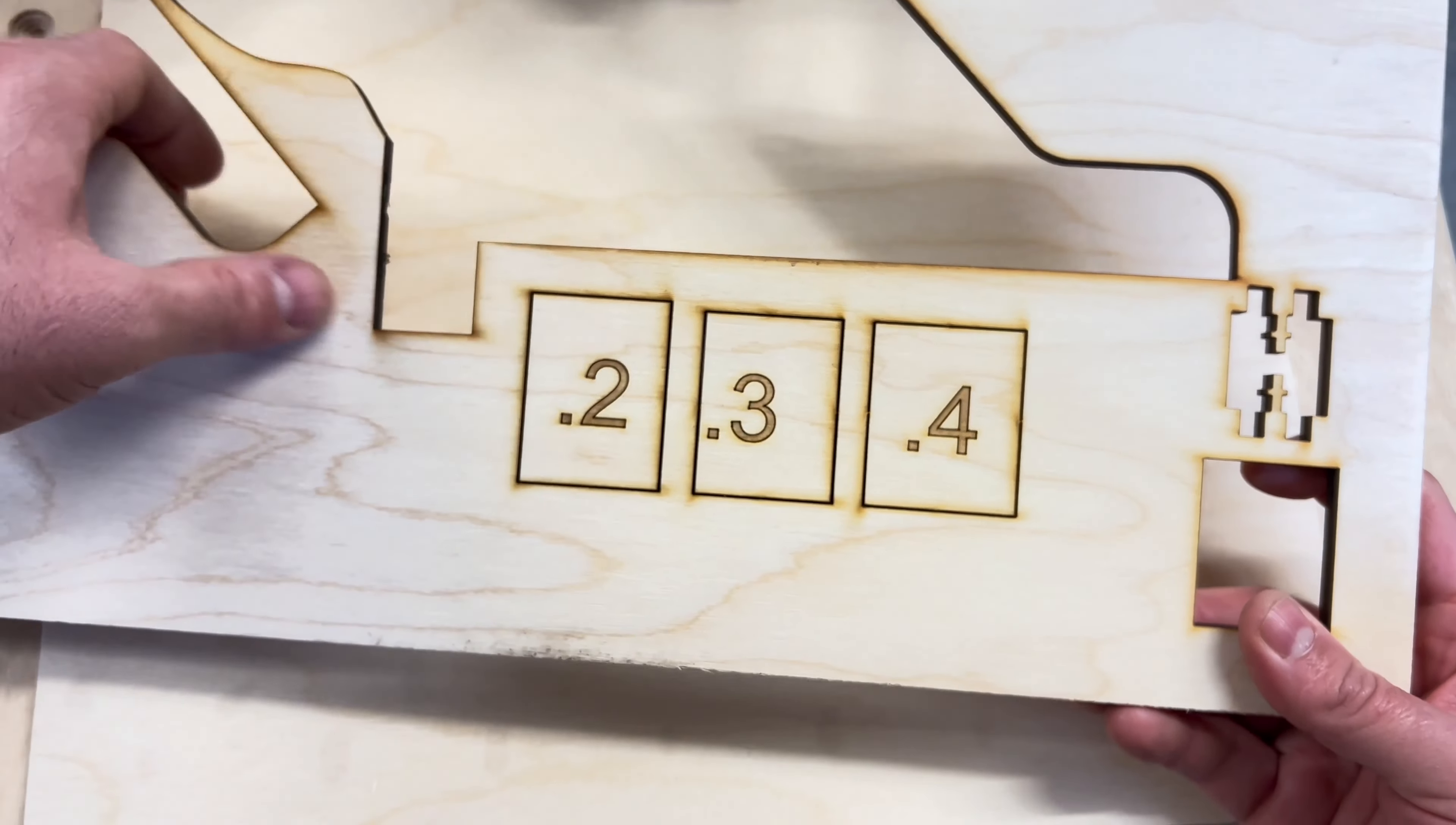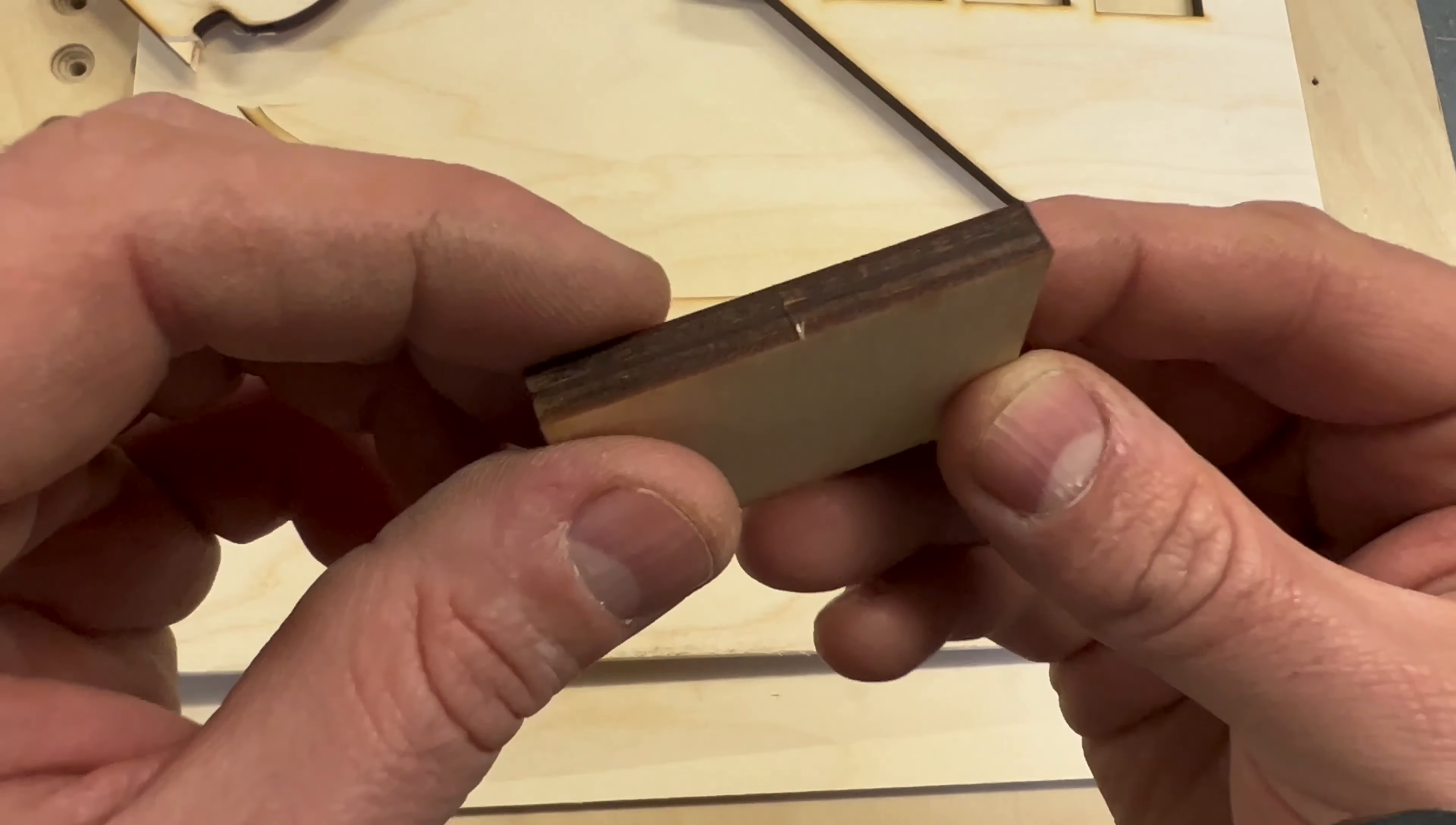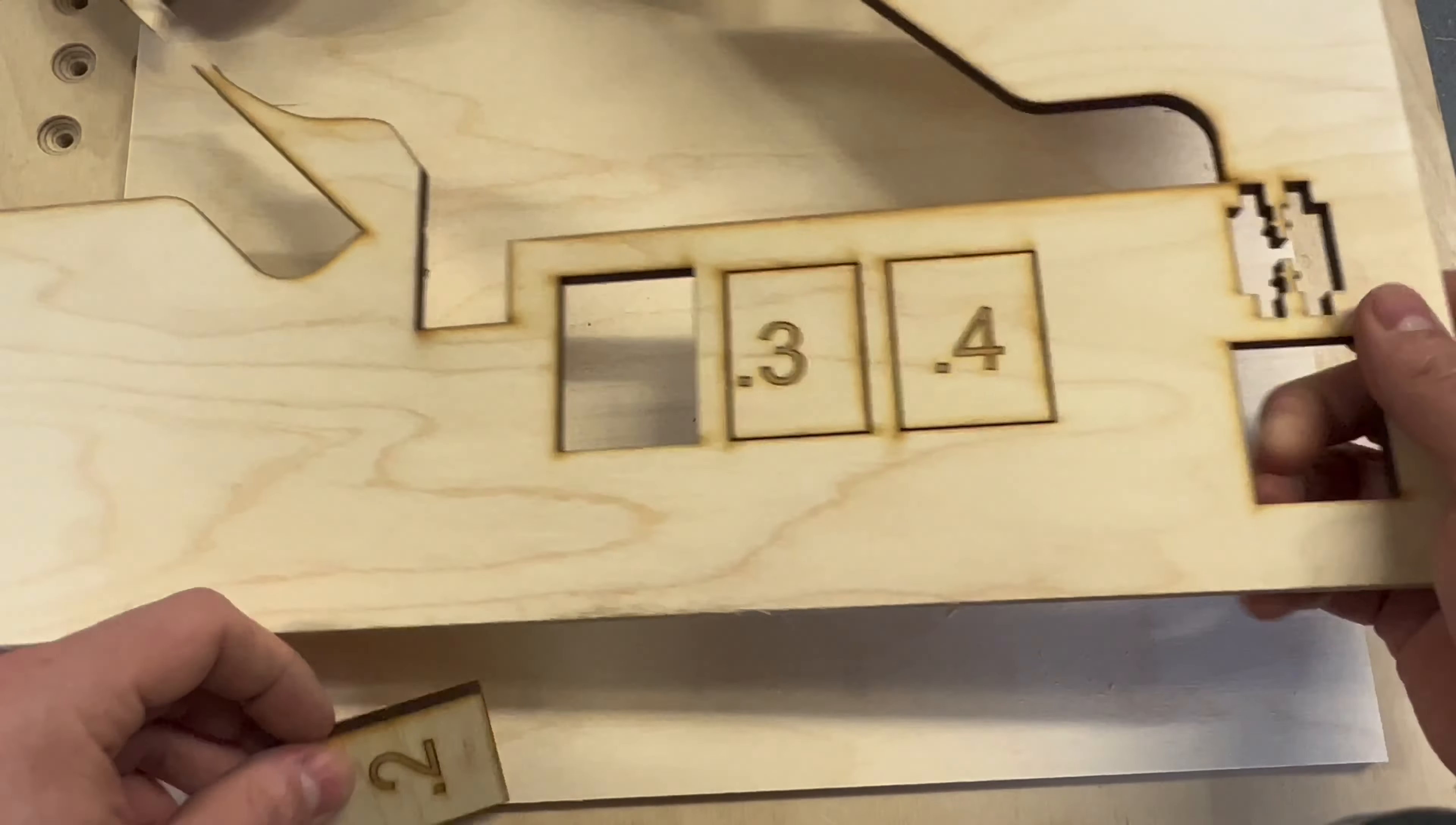The first tab test was 0.2 of a millimeter. You can see that pushed out quite easily, and here you can see the little remains of the tabs on the sides that were just holding on to the material to stop it falling out.